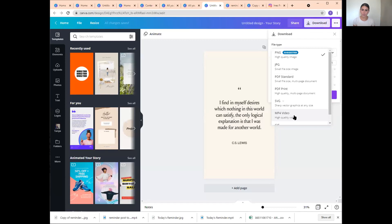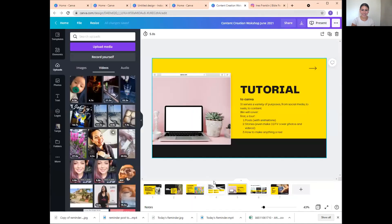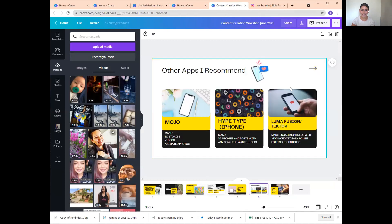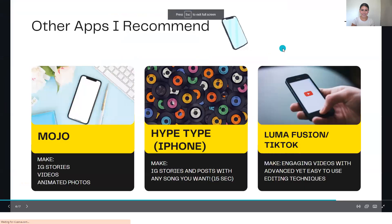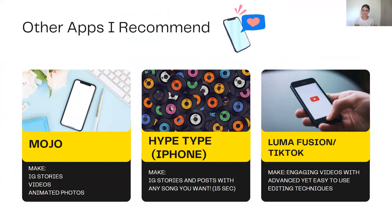This is so exciting! Next we are going to be going into other apps I recommend. So what we're going to cover is Mojo, Hype Type, LumaFusion and TikTok. This will take about five minutes. Kajia asked about the cover photo — I'll explain that at the end. Please go into the question and answer to ask your questions. So, apps I recommend — number one, I recommend Mojo. Mojo makes Instagram stories, videos, and animated photos.